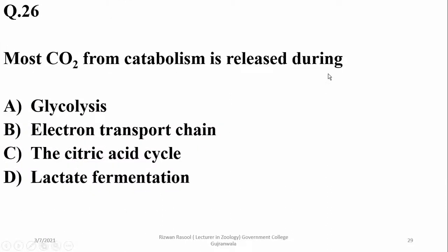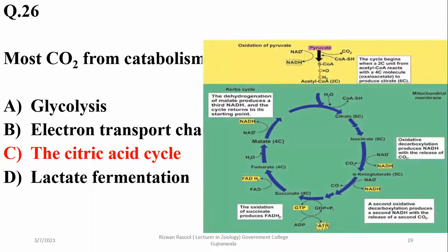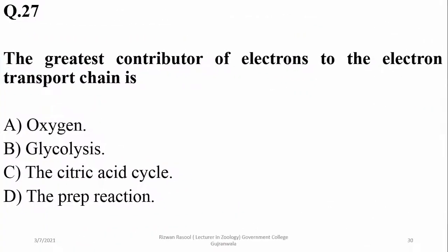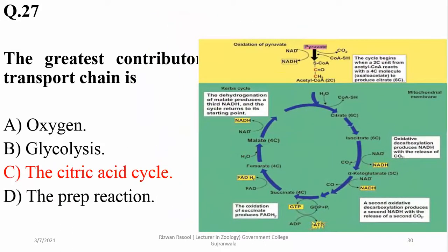More CO2 from catabolism is released during the citric acid cycle. There are two sites during which CO2 is produced. The greatest contributor of electrons to the electron transport chain is the citric acid cycle, or Krebs cycle, which produces the maximum NADH as well as FADH2 molecules.